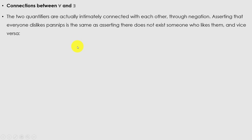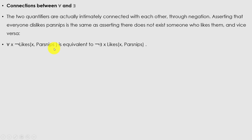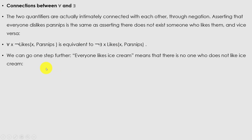Because reusing variable names can be a source of confusion, we will always use different variable names with nested quantifiers. The two quantifiers ∀ and ∃ are connected through negation: asserting that everyone dislikes parsnips is the same as asserting that there exists no one who likes them, and vice versa. So ∀x ¬Likes(x, Parsnips) is equivalent to ¬∃x Likes(x, Parsnips).